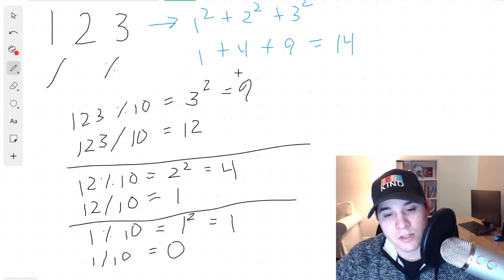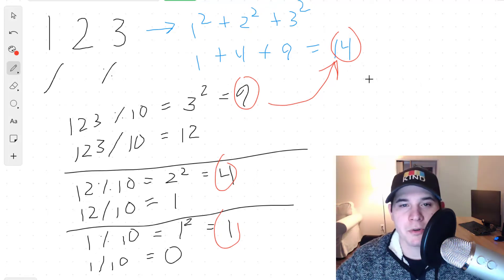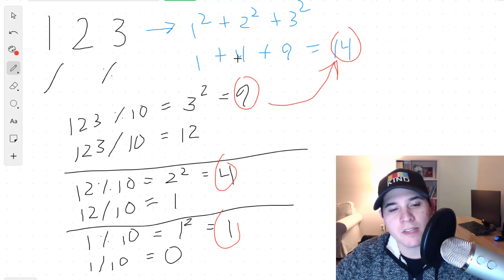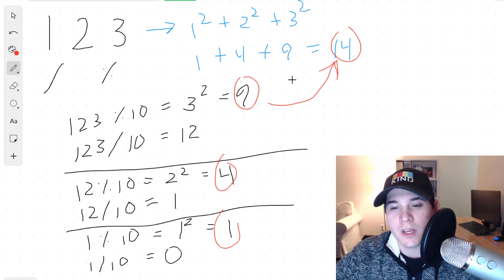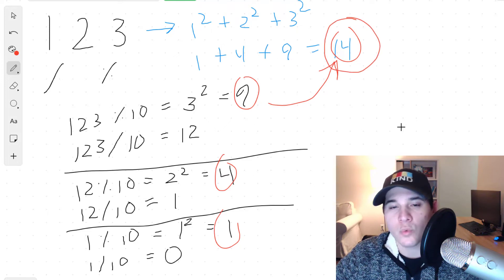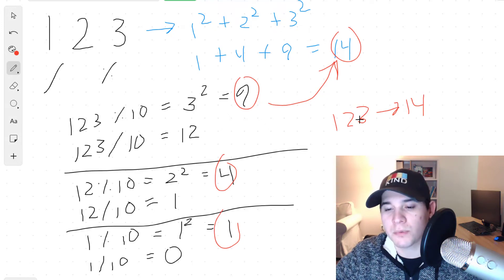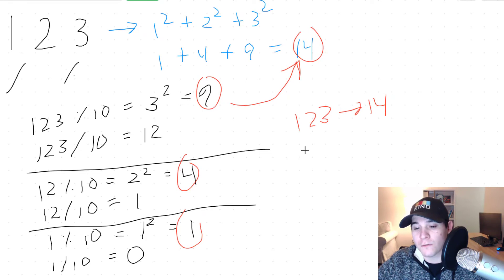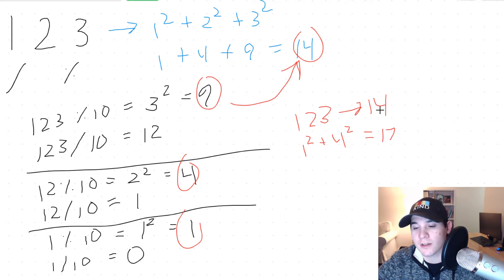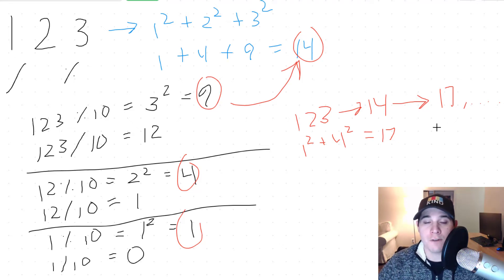To reiterate, the two parts we need are: first, implement Floyd's cycle finding algorithm, and second, perform this basic arithmetic to calculate our new nodes. In this example, 14 would be a new node. If we started with 123, our next node was 14, because 1 squared plus 2 squared plus 3 squared equals 14. Then from 14, we do 1 squared plus 4 squared, which is 1 plus 16 equals 17. So after 14, our next node would be 17. This keeps going until we either find a cycle or we don't.